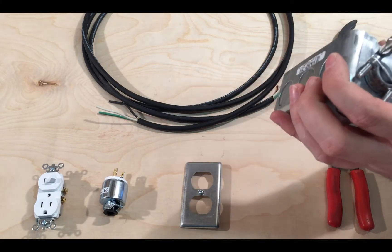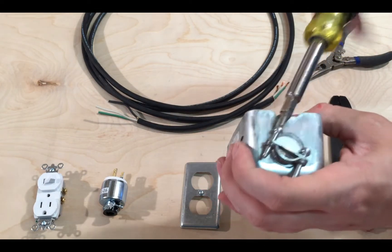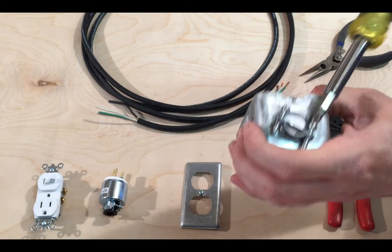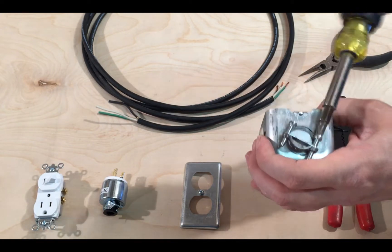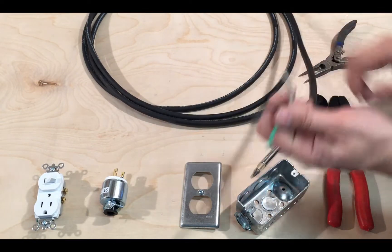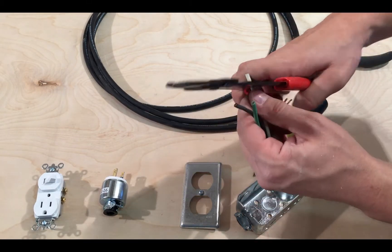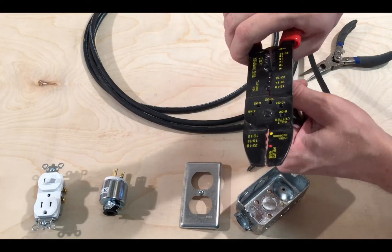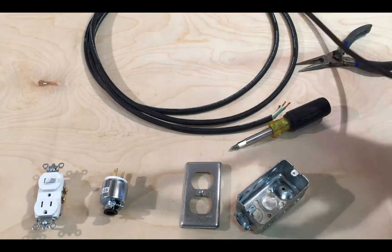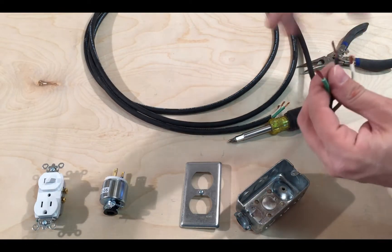Okay, unscrew this knockout so you can run the power cord through it. All right, that is completed. Now we want to take one end of the power cord and strip it down for the outlet. There we go.